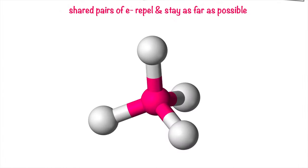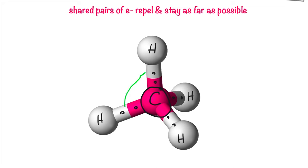Another example is methane. Methane contains carbon in the center with four hydrogens around the central atom. As I said, what determines the shape is the central atom. Carbon has no unshared electrons, so the only electrons involved are the bonding pairs. We have four bonding pairs of electrons trying to stay as far as possible from one another. The furthest apart these bonds can get is the tetrahedral shape, with about 109 degrees between each bonding pair.